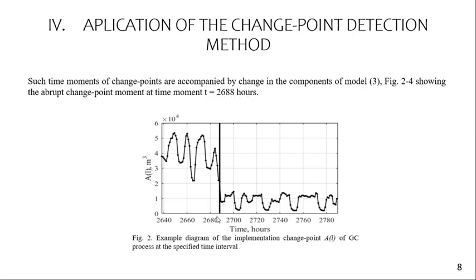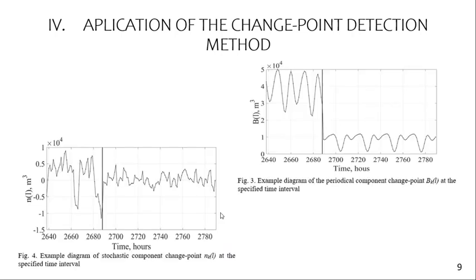On the next slides we show an example of a diagram of stochastic component change point detection for component N(k,l), and an example of a diagram of periodic component change point detection for component B(k,l) at the specified time interval.